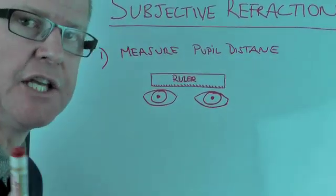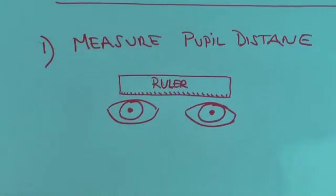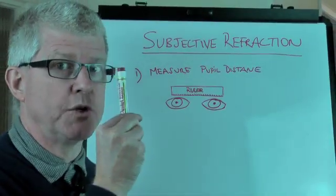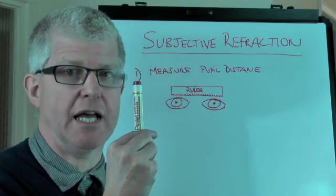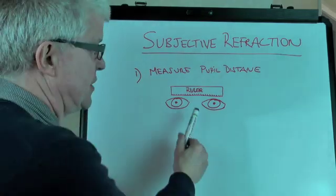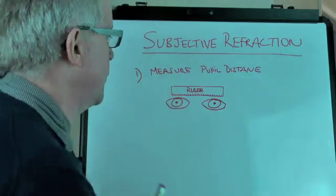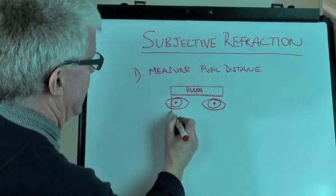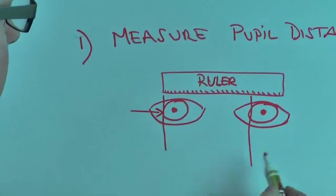What you need to do is get your patient to look at you. You close one eye and then with your open eye you hold up a pen and ask the patient to look at the pen. While you do that, you place a ruler above their eyes. And what we need to do is measure the distance from the outside of the iris to the inside of this iris here.